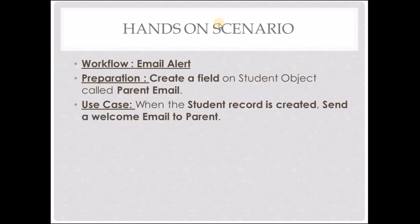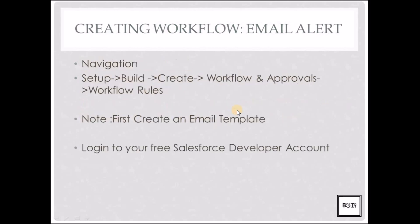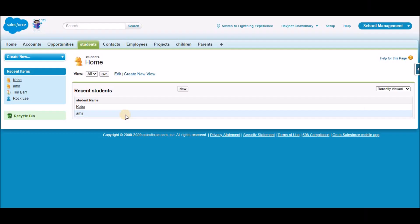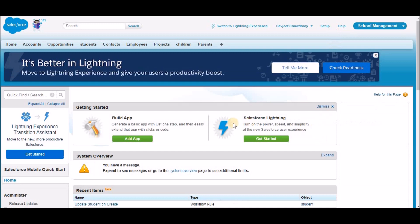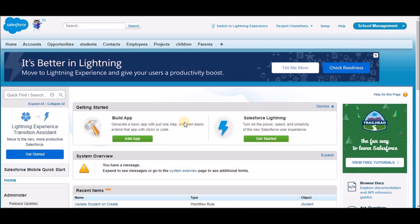Now let's get on to the hands-on scenario. We are going to create an email alert action inside the workflow rule. For preparation, we'll create a field on the student object called 'parent email' — the email will be sent to this email ID. The use case is: when the student record is created, send a welcome email to the parent. Before we create the email alert, we first have to create an email template. I'm currently logged into my Salesforce developer account. Click Setup in the top right corner, then click quick find and type 'objects'.